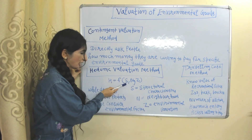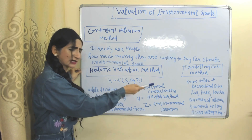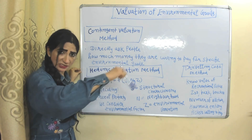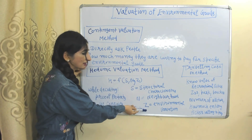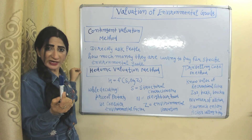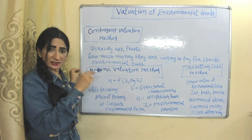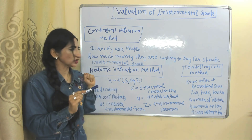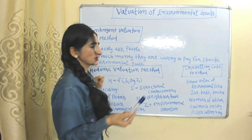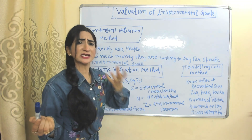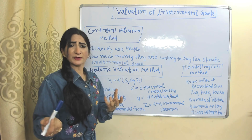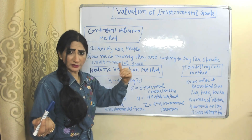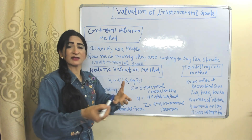The hedonic valuation method is a function of S — structural characteristics like number of rooms — N representing neighborhood characteristics like distance from school, and E representing environmental variations like quality of air. So while calculating property price, we add all these factors — this is called the hedonic valuation method. Under the travel cost method, we want to know the value of a recreational site, for example a zoo, park, or beach, and we can determine the value by the number of visitors and how much money they are willing to pay for the entry fee.